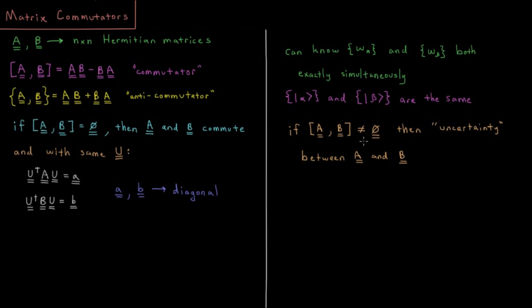So if they do not commute, then we say that there is an uncertainty between A and B.